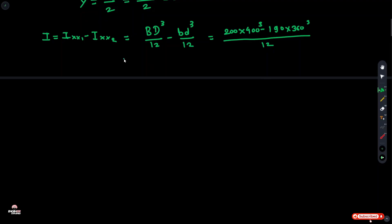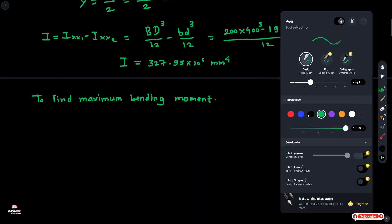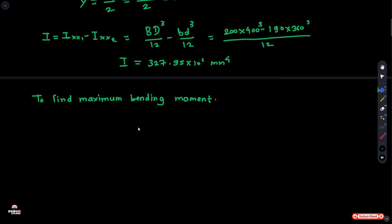So I equals 327.95 × 10⁶ mm⁴. To find the maximum moment, we have a simply supported beam with UDL.